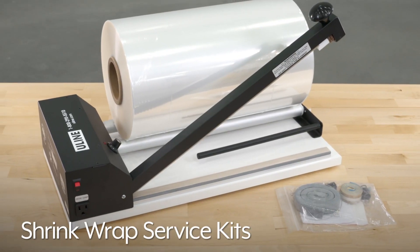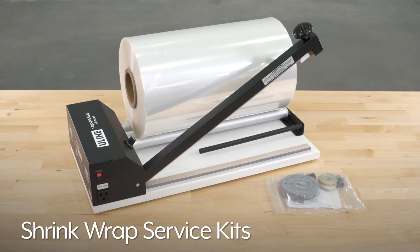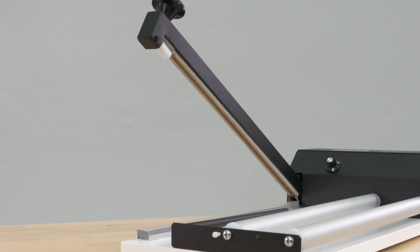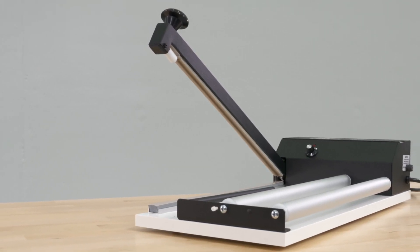Service kits for Uline's industrial shrink wrap systems include everything needed for a complete maintenance of your system. After continued use, the Teflon tapes and heating element may need to be replaced as part of normal routine maintenance on the unit.